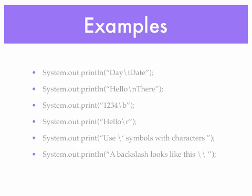Some examples of those escape characters: to print 'day', tab over and print 'date', use backslash-T. For 'hello' followed by a newline and then 'there', use backslash-N. For one, two, three followed by a backspace, use backslash-B. For 'hello' followed by a carriage return, use backslash-R. To print a single quotation mark, put a backslash in front of it. And to print a backslash, use backslash-backslash — for example: 'a backslash looks like this \' will print a backslash.